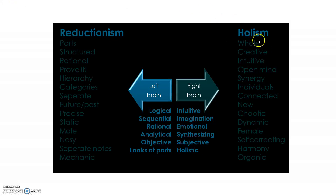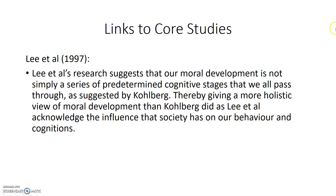Here is a quick diagram — if you want to pause the video and have a look at it, you can — but I'm going to be moving on to links to course studies. For example, Lee et al. 1997. Lee et al.'s research suggests that our moral development is not simply a series of predetermined cognitive stages that we will pass through, as suggested by Kohlberg. Therefore, this gives a more holistic view of moral development than Kohlberg did, as Lee et al. acknowledged the influence that society has on our behaviour and our cognitions.